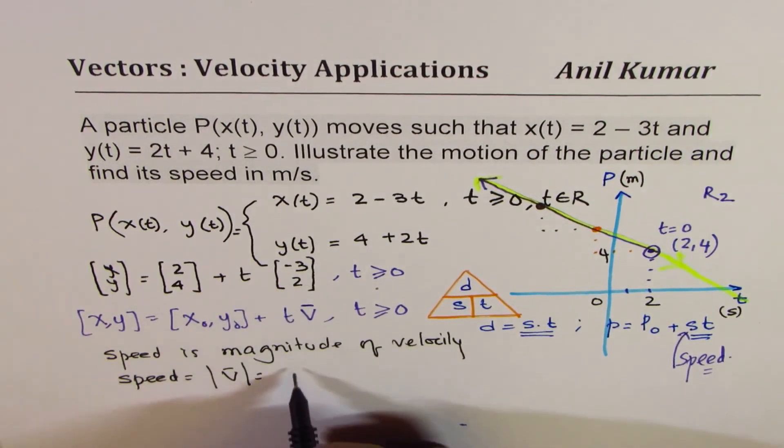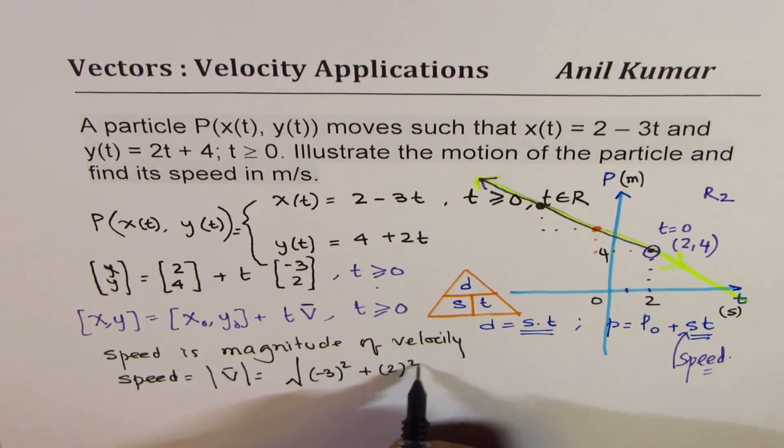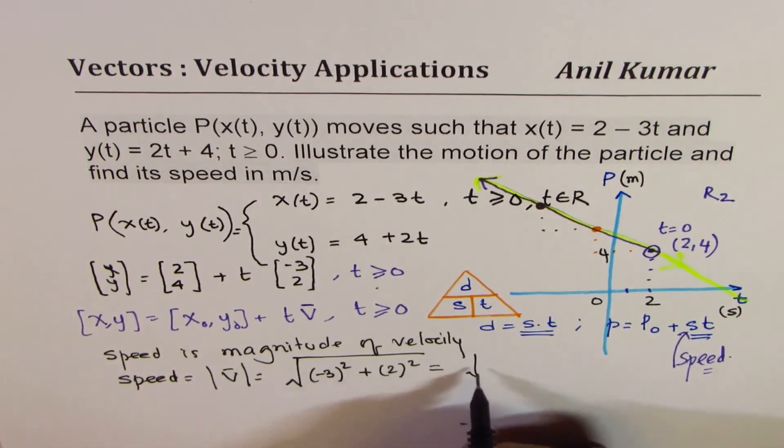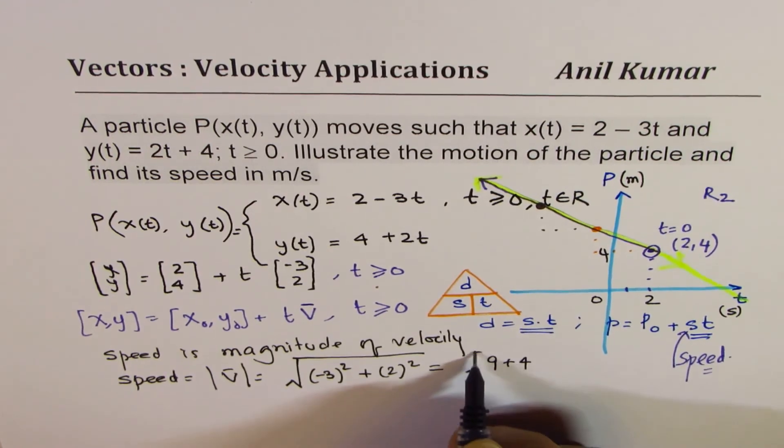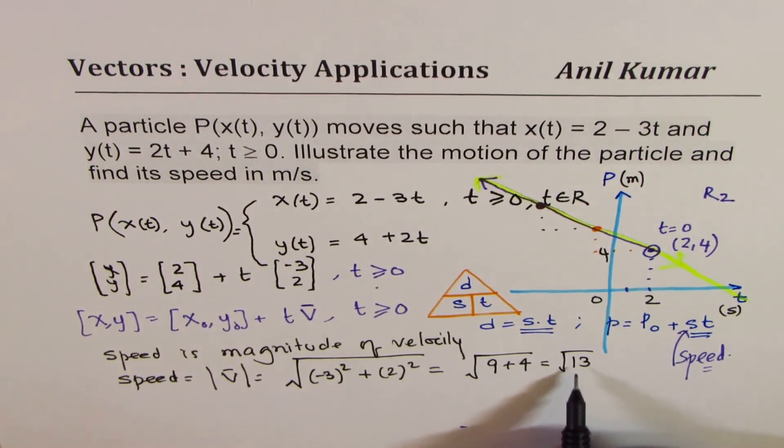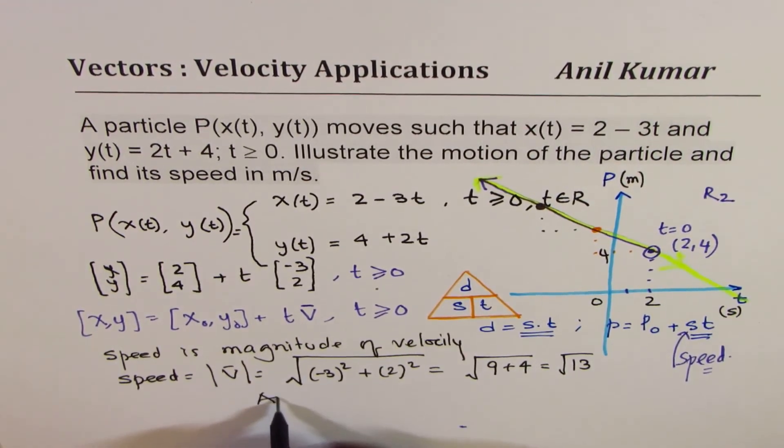Let's calculate speed now. Speed, which is magnitude of velocity—and this is our velocity vector minus 3, 2—so magnitude means square root of minus 3 squared plus 2 squared. That gives you square root of 3 squared is 9 plus 4, and that is square root of 13.